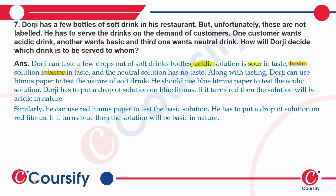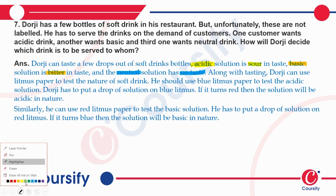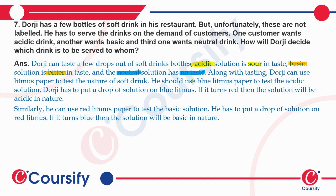A basic drink tastes bitter, and a neutral drink has no taste. Along with tasting, Durji can use a litmus paper test to find the nature of the drink. He should use blue litmus paper to test the acidic solution — put a drop of solution on blue litmus paper, and if it turns red, then the solution is acidic.